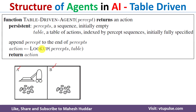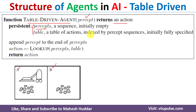For this environment the table-driven agent program looks something like this. The table-driven agent accepts the current percept and based on the current percept it returns an action. These are the data structures required: the first is 'percepts', which is a sequence of percepts that is initially empty. When we place the robotic vacuum cleaner into the environment it has not yet sensed anything, so percepts is initially empty.